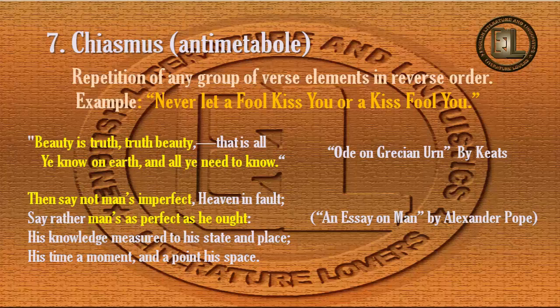The poetic example of chiasmus: the first one is from John Keats' 'Ode on a Grecian Urn' — 'Beauty is truth, truth is beauty, that is all ye know on earth, and all ye need to know.' The second example is from 'An Essay on Man' by Alexander Pope — 'Say not man's imperfect, say rather man's as perfect as he ought.' These are poetic examples of chiasmus.